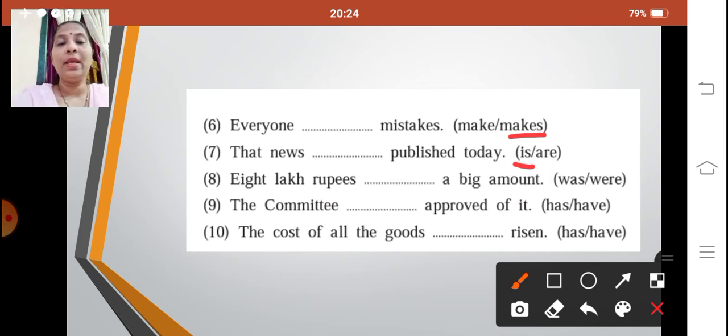Eight lakh rupees dash a big amount. Eight lakh rupees was a big amount. The committee dash approved of it. The committee has approved of it. The cost of all the goods dash risen. Yes, so what is the subject over here? The cost. Yes, so though goods is given in plural, but the main subject is the cost, so the cost should agree with the verb. So the cost of all the goods has risen. So this is the exercise of the subject and verb agreement.